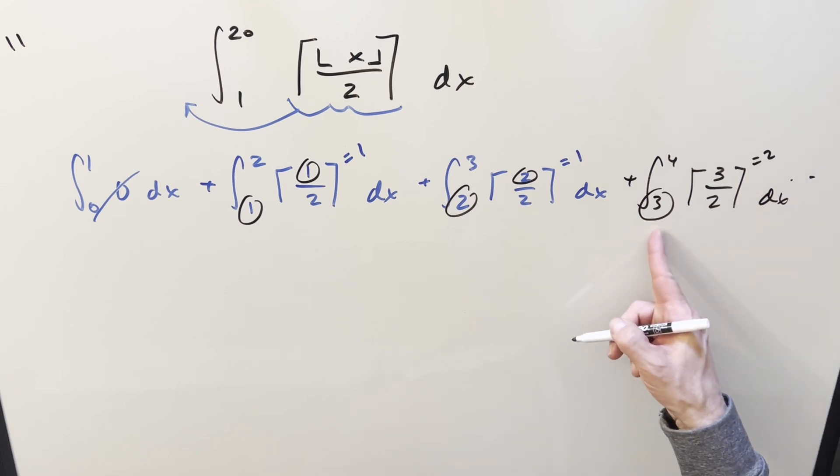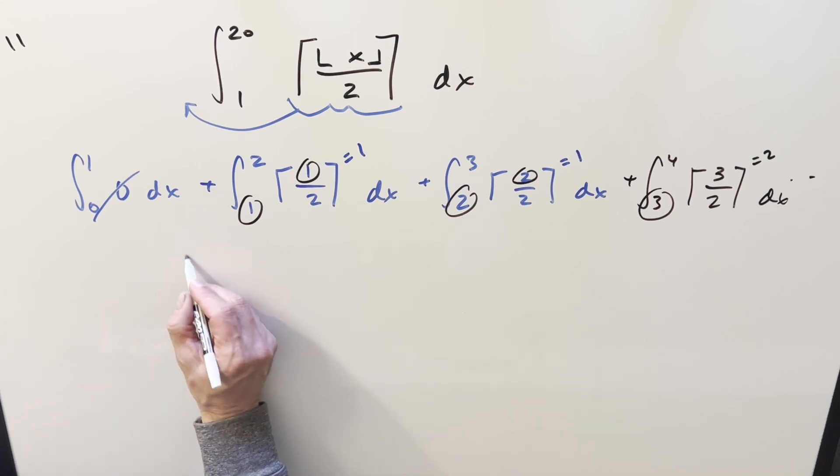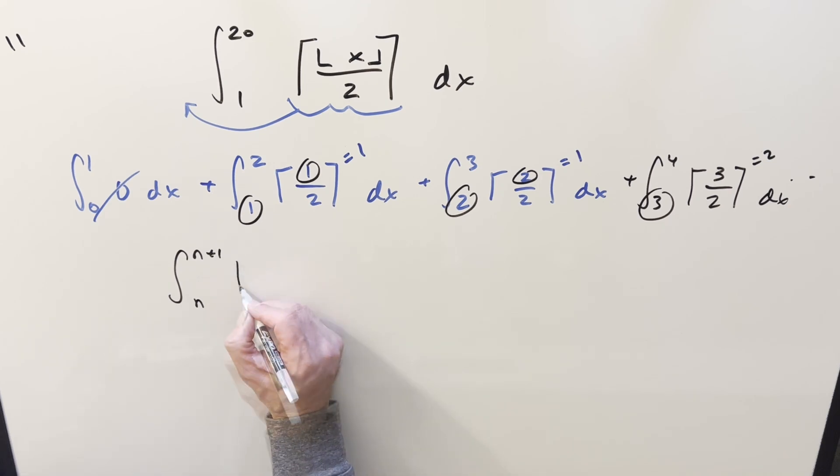So this is going to keep going like this until this lower bound here is going to be 19 and the upper bound is 20. So what I want to do is generalize this and put it inside of a sum. So each of these we can write as an integral from n to n plus 1, and it's going to be ceiling function of n over 2.